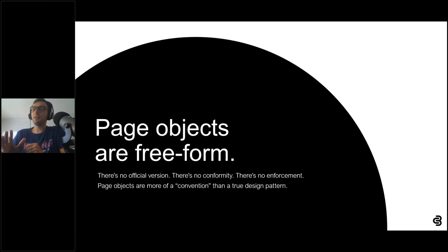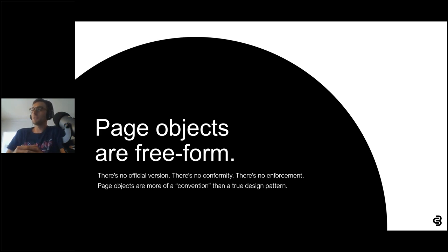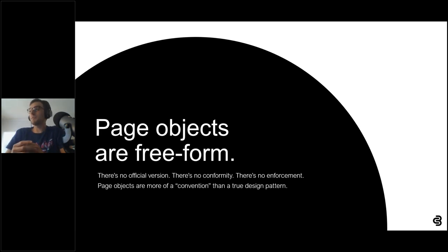The base page also becomes very top-heavy as testers add more and more shared code. Most frustratingly, the page object code shown here is merely one type of implementation — every team implements page objects differently. There's no official version of the page object pattern and no conformity in its design. There's almost no way for the pattern to enforce good practices, which is why people argue over things like whether locators should be public or private. Page objects would be better described as a convention rather than a true design pattern.